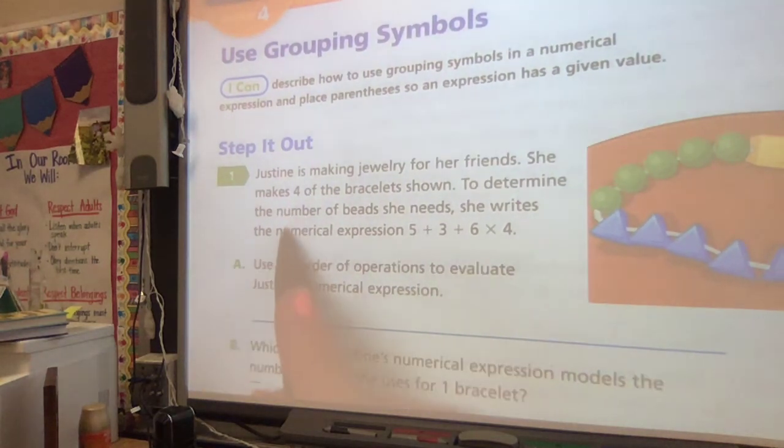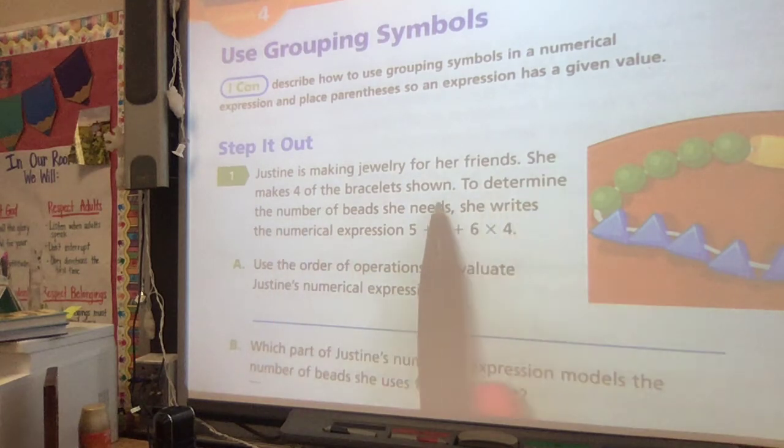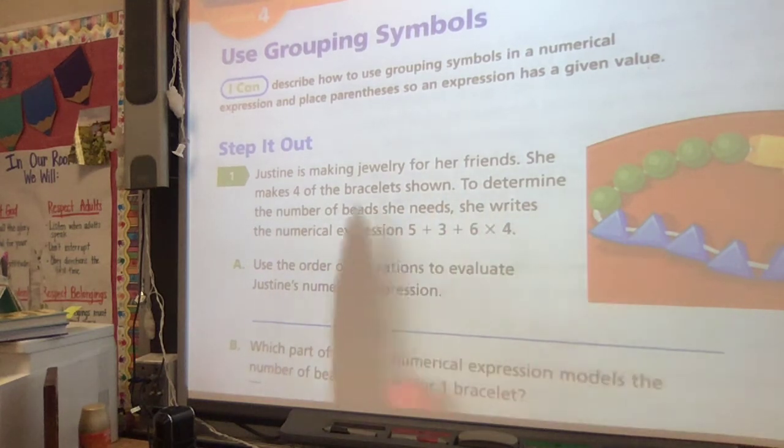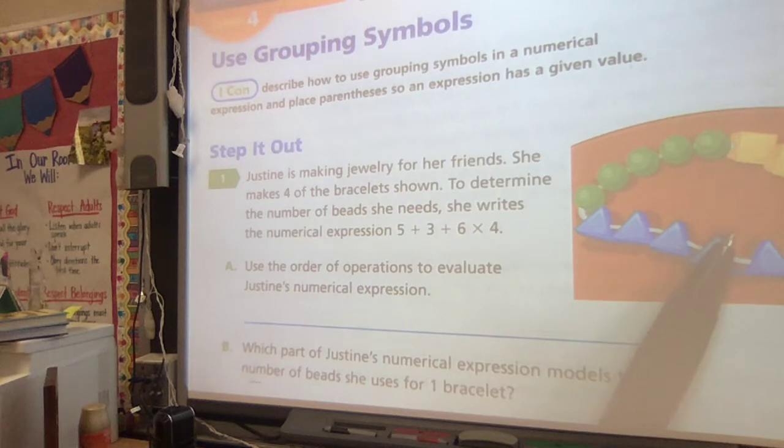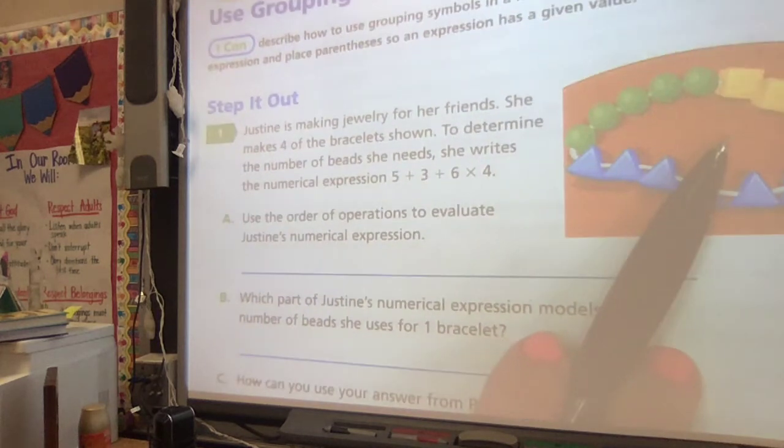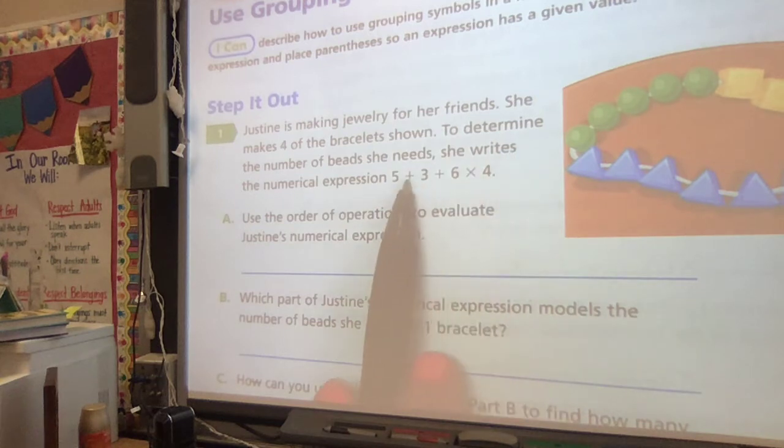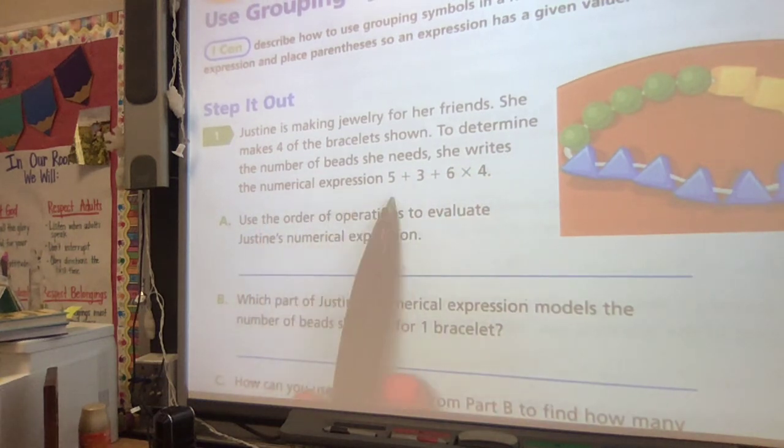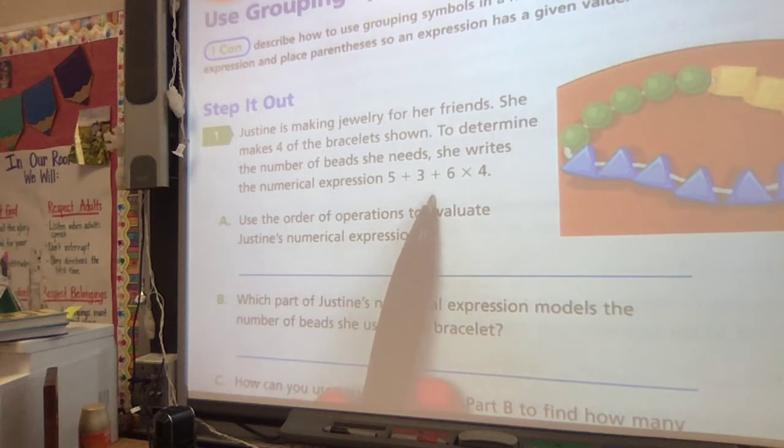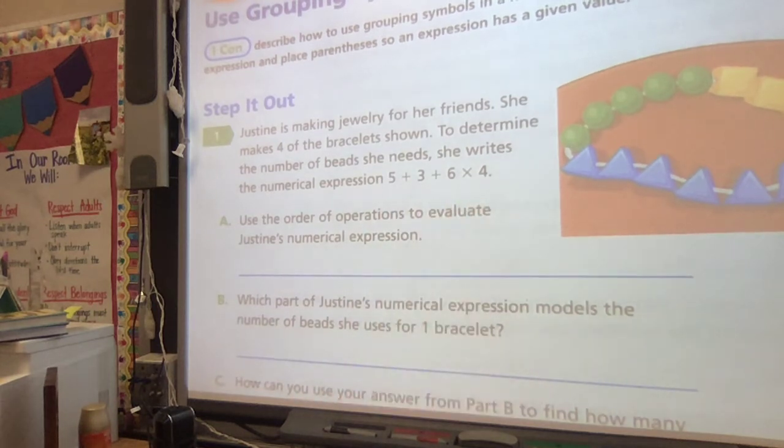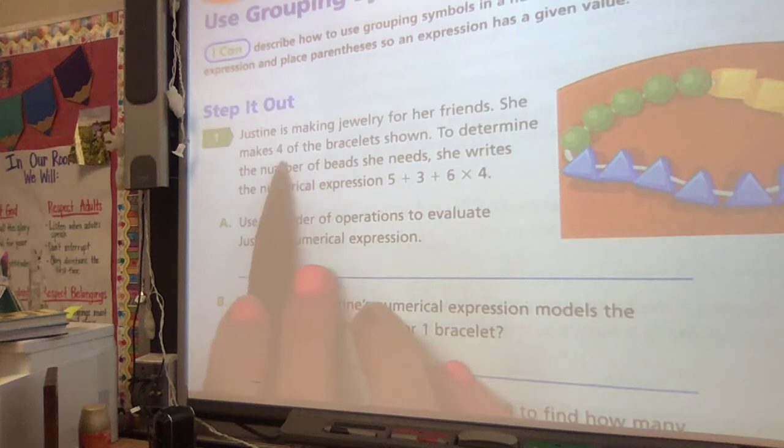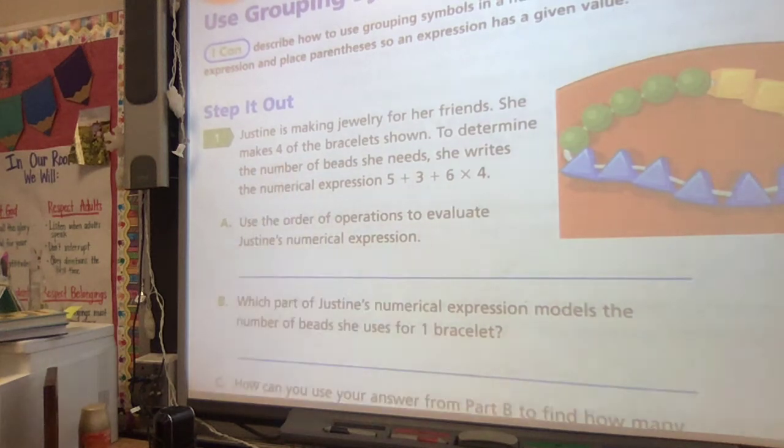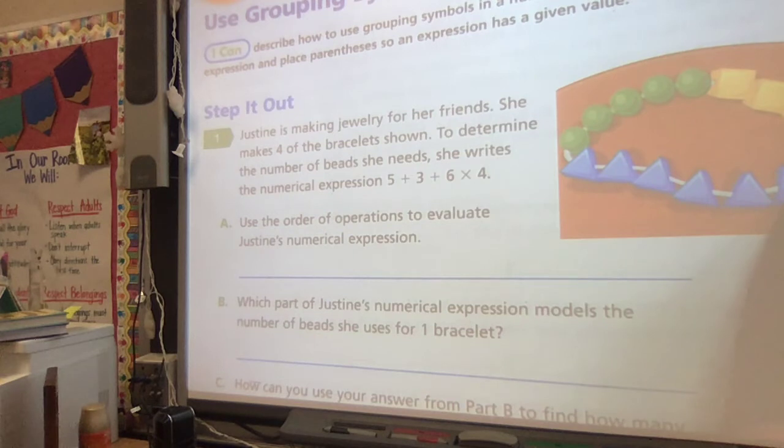Our first one says Justine is making jewelry for her friends. She makes four of the bracelets that we see in the picture, so we need to look at the picture to help us. To determine the number of beads she needs, she writes the numerical expression 5 plus 3 plus 6 times 4, because she wants to make four bracelets.